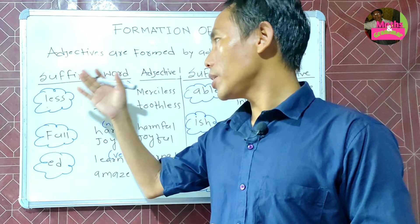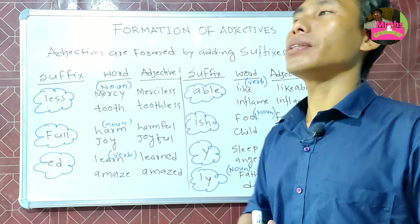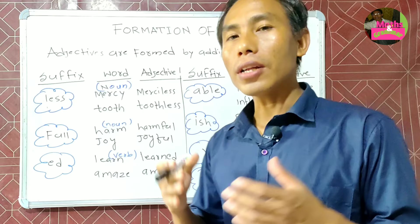The most commonly used suffixes in grammar are given here: -less, -full, -ed, -able, -ish, -y, and -ly. These are the most commonly used suffixes when we come to form adjectives in the English language.